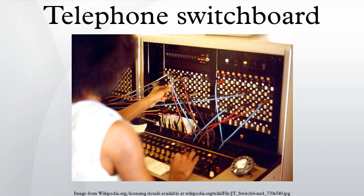On a trunk, on-hook and off-hook signals must pass in both directions. In a one-way trunk, the originating or A board sends a short for off-hook and an open for on-hook, while the terminating or B board sends normal polarity or reverse polarity. This reverse battery signaling was carried over to later automatic exchanges.